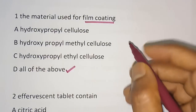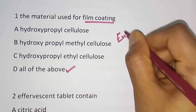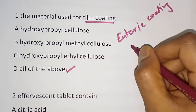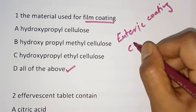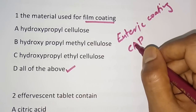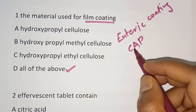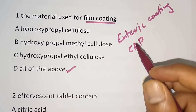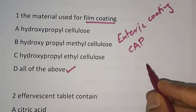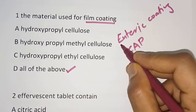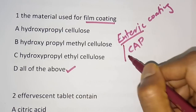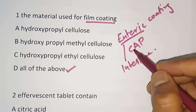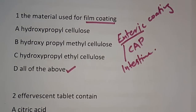Another type is enteric coating. Enteric coating is mainly used for drugs to ensure that the tablet disintegrates in the intestine, that's why the name enteric coating. The material used for enteric coating is cellulose acetate phthalate. Now we will move to the next question.